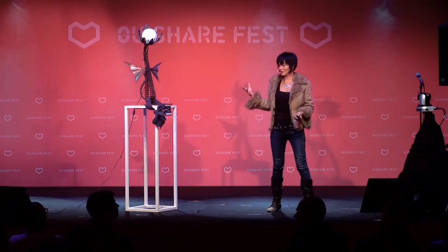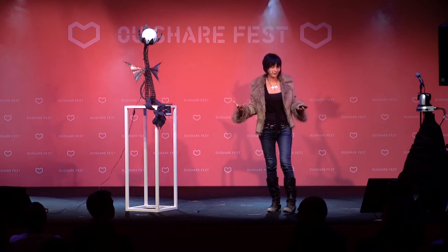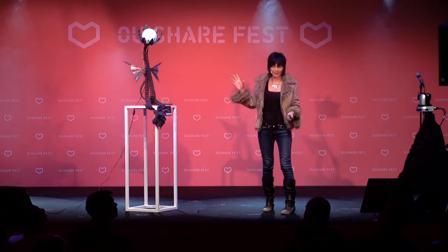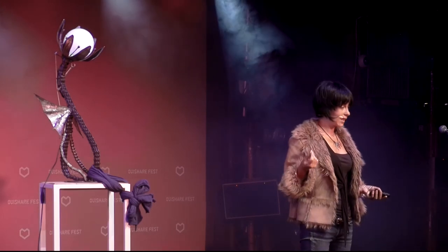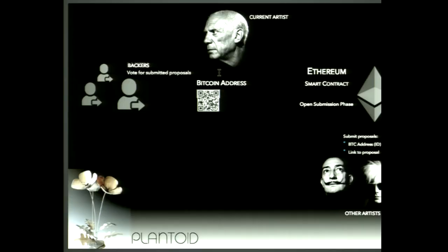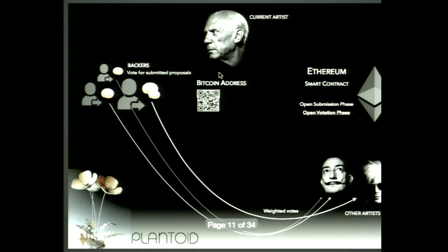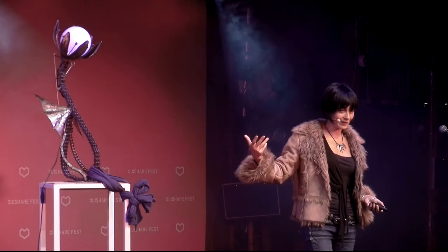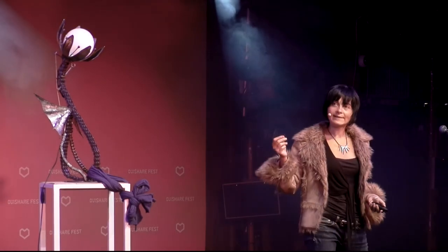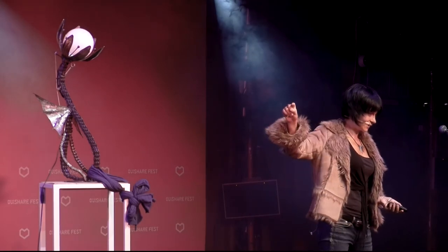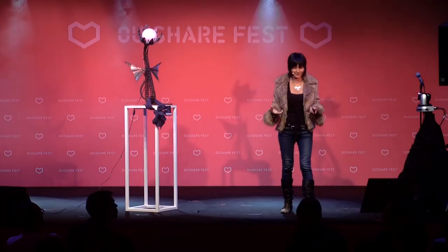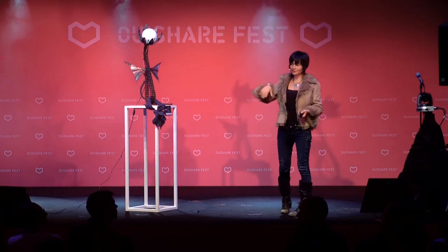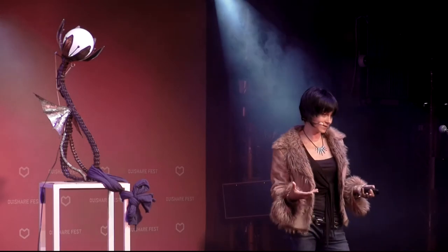The mating phase is where the plantoid will actually look for human beings who are willing to help it reproduce itself. The smart contract on the Ethereum blockchain will open a call for submission, inviting people to submit proposals as to how they envision the next version of the plantoid to look like. Then everyone who has funded the plantoid initially can express their voice as to which proposal should be selected, by sending a microtransaction to the Bitcoin address which uniquely identifies those proposals. This vote is weighted by the amount of bitcoins that everyone has sent to the original plantoid, and the smart contract processes all this information and identifies who the winner is.